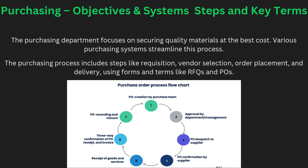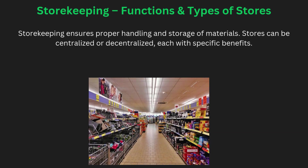Purchasing is a critical function in material management. The main objectives are to buy materials of the right quality, in the correct quantity, at the best price, from the right source, and delivered at the right time. There are different systems of purchasing, such as centralized and decentralized purchasing. The procedure includes identifying the material need, selecting the supplier, placing the order, and ensuring timely delivery. Various terms like purchase order, requisition form, and invoice are frequently used, and the purchase department follows standardized forms to maintain efficiency.